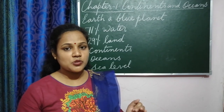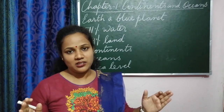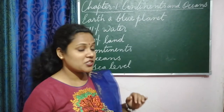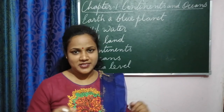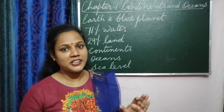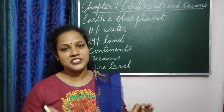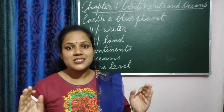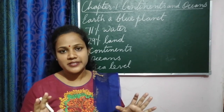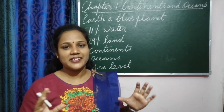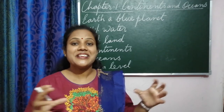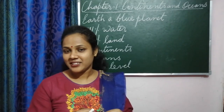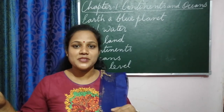We are going to learn about the biggest water body, that is the ocean. So what is an ocean? An ocean is the largest water body. And what is a continent? A continent means the largest land mass. So oceans are the largest water bodies. There are four oceans and they are all interconnected. The water of all four oceans mixes up.